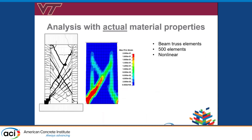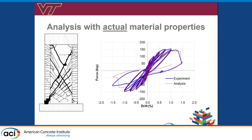For our analysis, we use a non-linear beam truss model, which is much more numerically efficient than a finite element continuum model, and it's able to capture the inelastic failure mode of this structure with bar buckling and rupture of the bars. This is a comparison of our numerical results with the actual experimental force-displacement hysteretic curve using tested material properties. You can see it follows the displacement and strength degradation quite well — yielding occurs in nearly the same spot, and the crushing failure occurs at the same drift ratio.